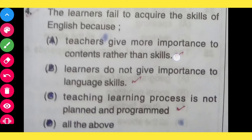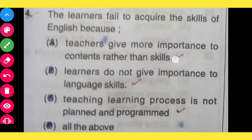Question number 4: The learners fail to acquire the skill of English because: option A, teachers give more importance to contents rather than skill; option B, learners do not give importance to language skill; option C, teaching-learning process is not planned and programmed; option D, all of the above. The correct answer is all of the above.